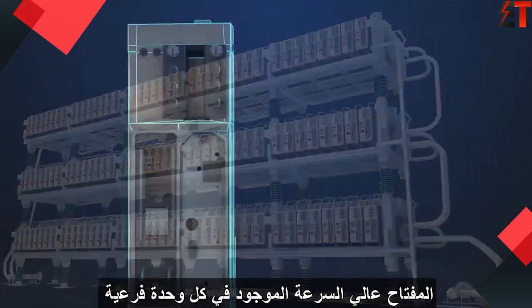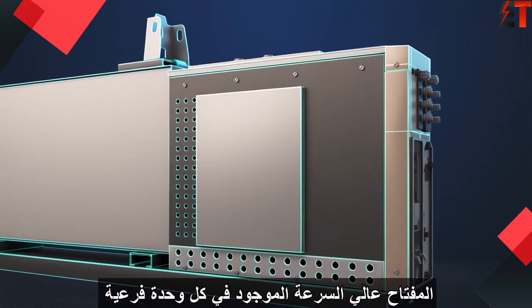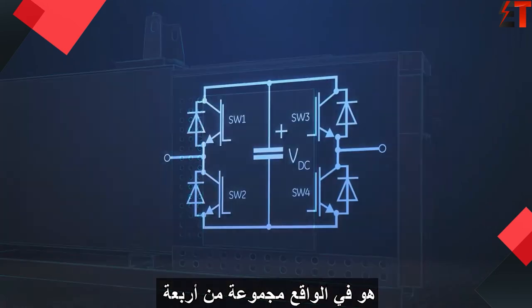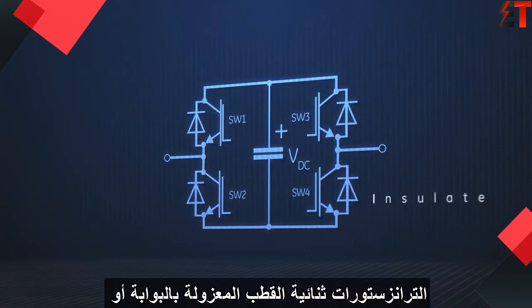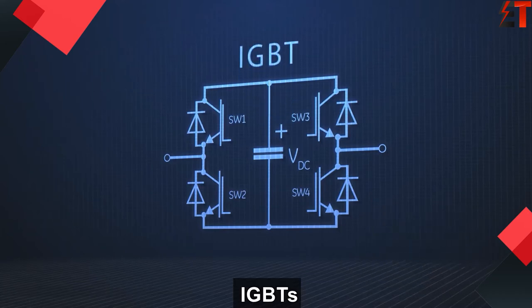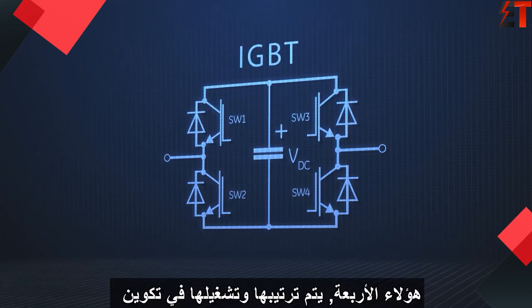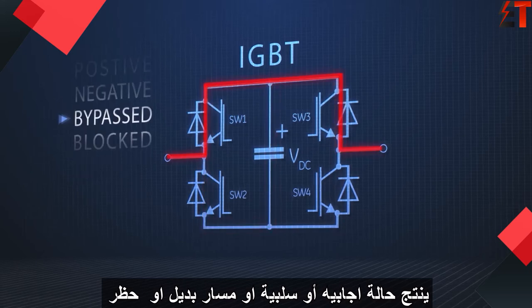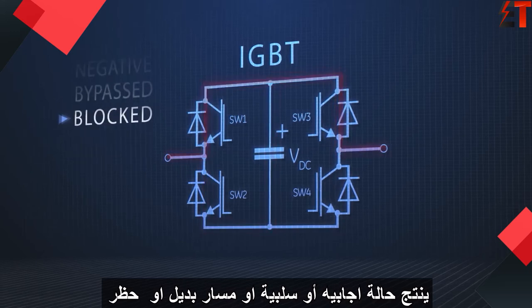The high-speed switch in each sub-module is actually a set of four power electronic devices called insulated-gate bipolar transistors, or IGBTs. These four IGBTs are arranged and operated in a configuration that produces a positive, negative, bypassed, or blocked state.